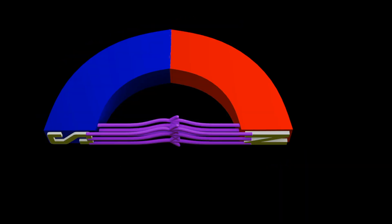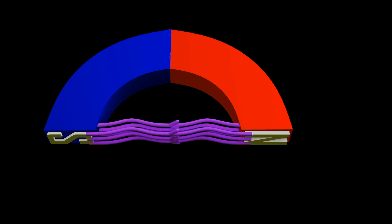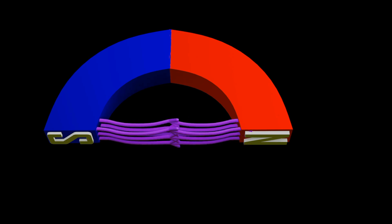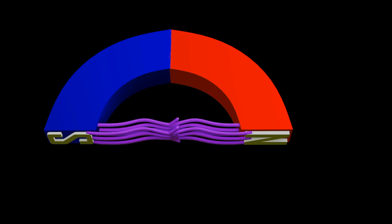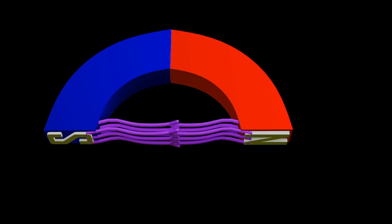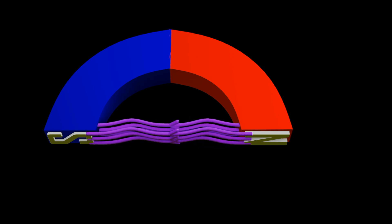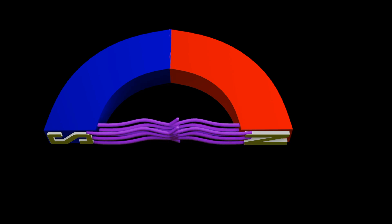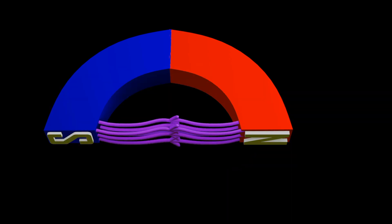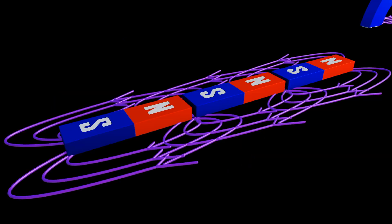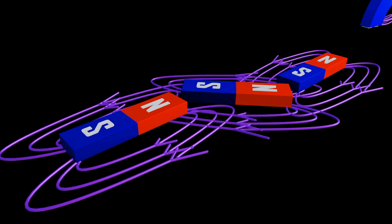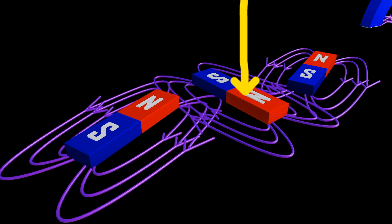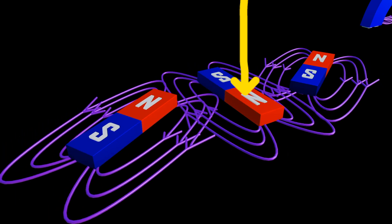Having a U-shaped magnet forms the magnetic field between the south and north pole even stronger. Arranging three magnets as shown, rotating the middle magnet creates a slight rotation in the other magnets.